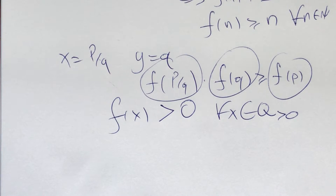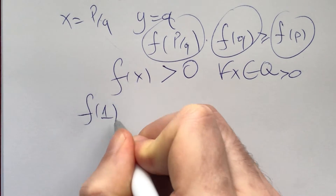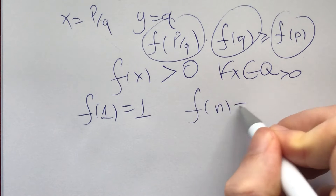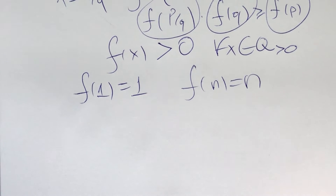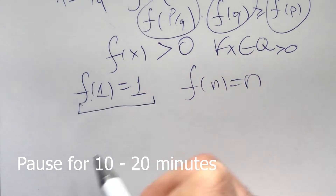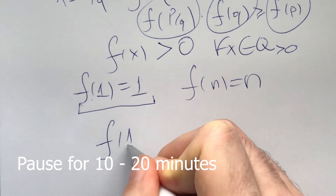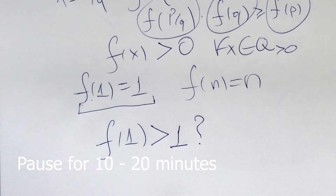Now the focus is to prove f(1) = 1, and after that prove f(n) = n for all natural numbers n. I invite you to pause for 10 to 20 minutes and ask yourself what happens if f(1) is not equal to 1 — in fact, what happens if f(1) is strictly greater than 1. Now is the time to pause.